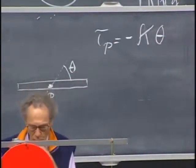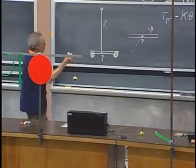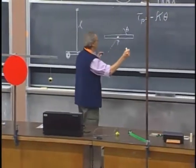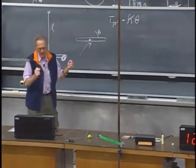So we generate a torque which is proportional to the angle, very similar to the linear spring, whereby we generate a force which is proportional to the linear displacement. Now you generate a torque which is linearly proportional to the angle.